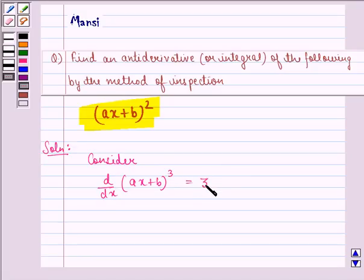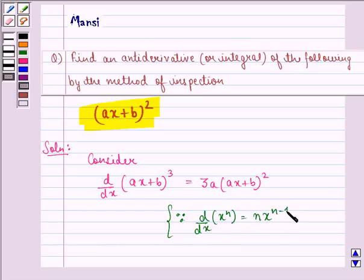That is equal to 3 into a into ax plus b, the whole square, because we know that d by dx of x raised to power n is equal to n into x raised to power n minus 1.